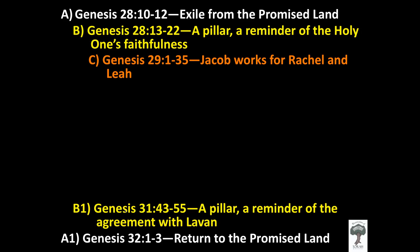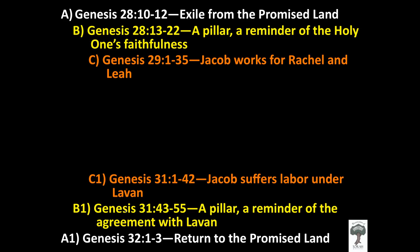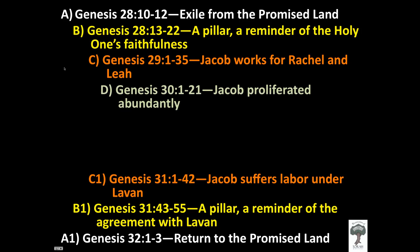Next we move to Genesis chapter 29, verses 1 through 35, describing how Jacob worked for Rachel and Leah — the seven years he worked, received Leah, then worked another seven years for Rachel. This is thematically connected to Genesis chapter 31, verses 1 through 42. When Laban caught up with Jacob, Jacob stood up and rebuked Laban, recounting the suffering and labor he had endured. In Genesis 31, he recounts all the hard work he did, whereas in Genesis 29 it is the passage actually describing that work.